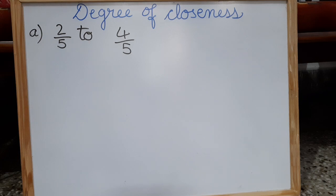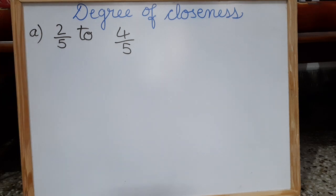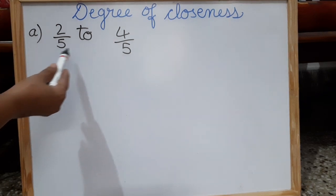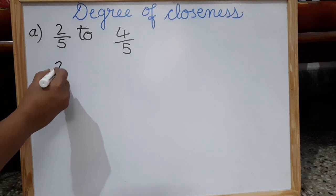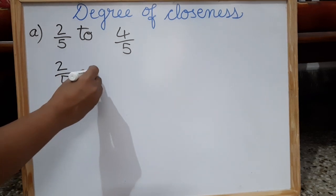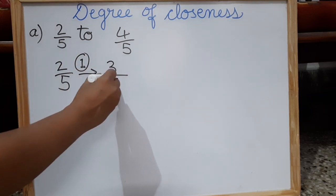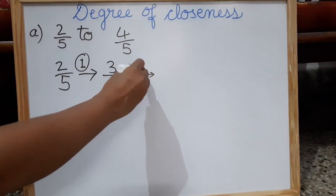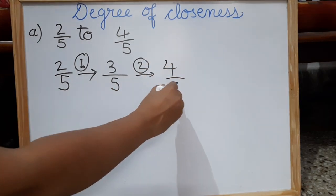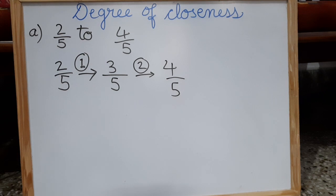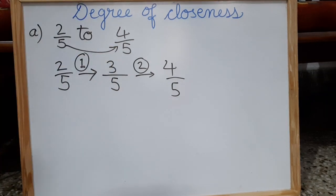I've taken an example: 2 by 5 and 4 by 5. You have to find the degree of closeness between these two like fractions. So when we start from 2 by 5 and move one step ahead, you will get 3 by 5. Then move one step again ahead and you will get 4 by 5.